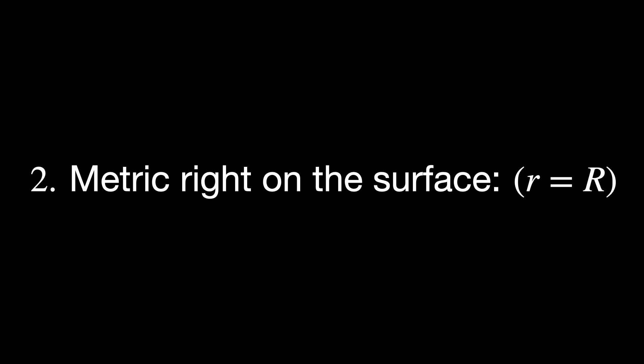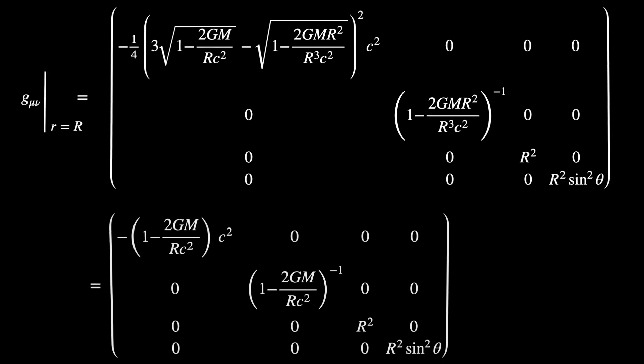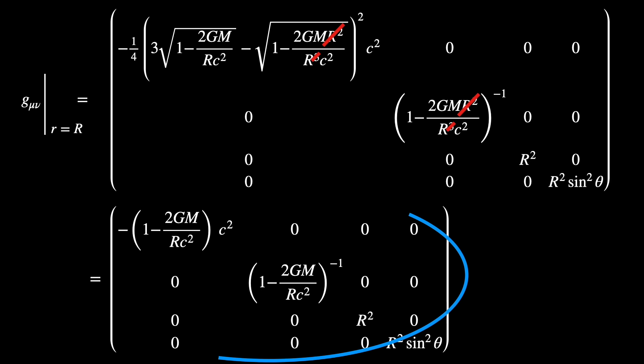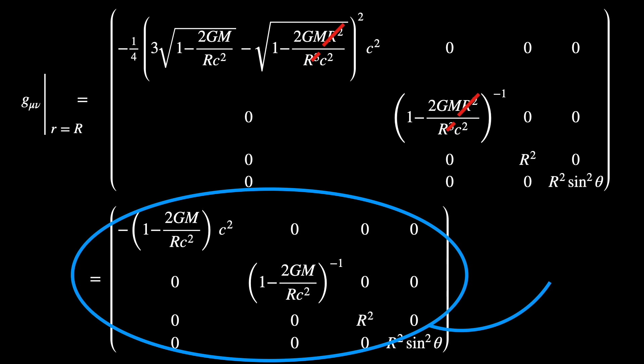Second observation: the metric right on the surface. If we take the interior Schwarzschild metric and evaluate it at R equals the surface radius R, we recover exactly the exterior Schwarzschild metric at that point. It makes sense if you think about it.